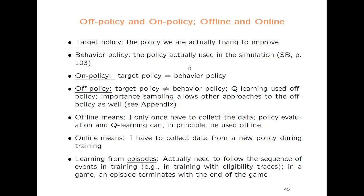OnPolicy, OffPolicy, Offline, Online. Offline typically means you collect the data once and then work with it offline without collecting new data. Q-learning in principle can be used offline, but in practice it doesn't work that well. Online means you have to collect new data from the policy during training. Then there's learning from episodes — for some algorithms you have to wait until the game is over to do learning, as in Monte Carlo approaches, or you need sequential data about actual sequences of events. These are called episodic situations.